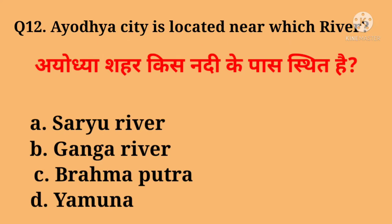Question number twelve: Ayodhya city is located near which river? Right answer is Sarayu River.